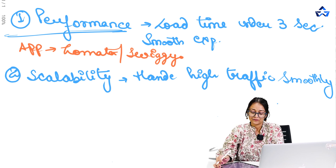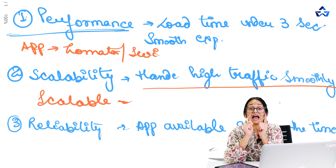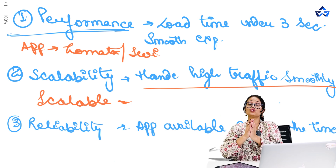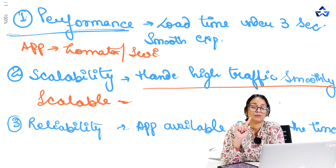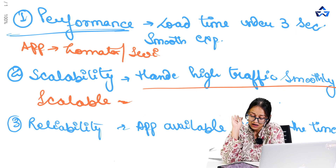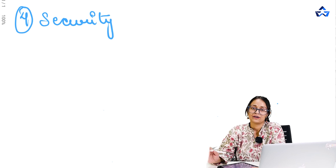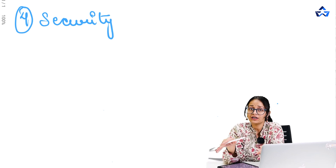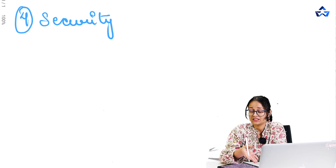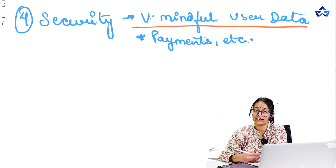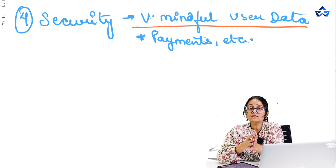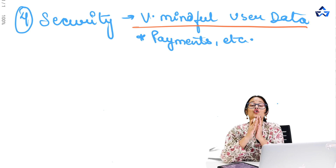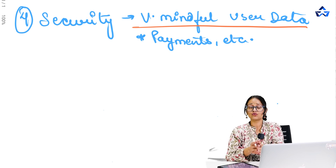Number three is reliability, which means our app should be available 99% of the time so that users can order food whenever they want. Number four is security — a very major topic. When building our food delivery app, we should be very mindful of the user data we are collecting, follow proper privacy policies and guidelines, and ensure that user data is encrypted so that payments made through our app are secure.